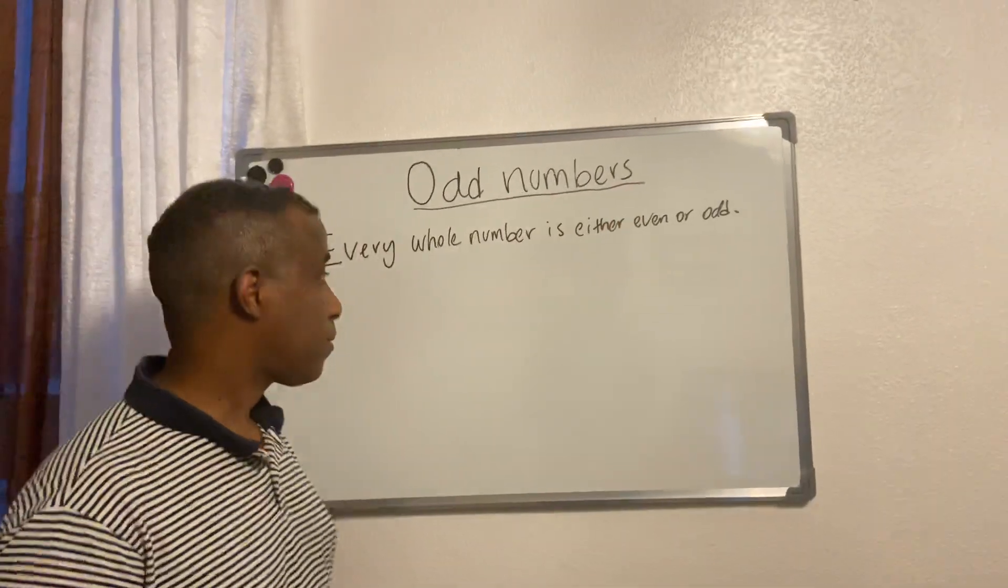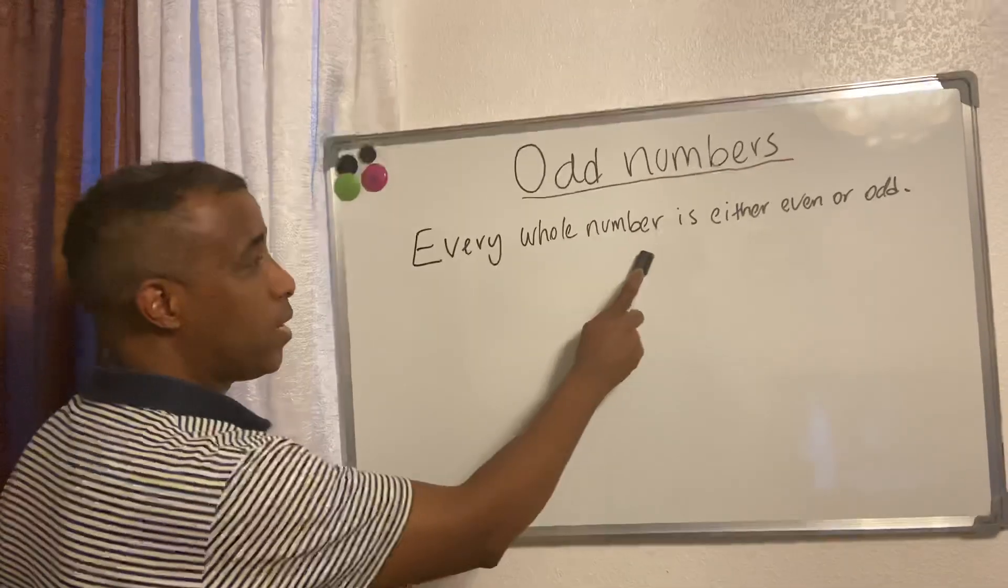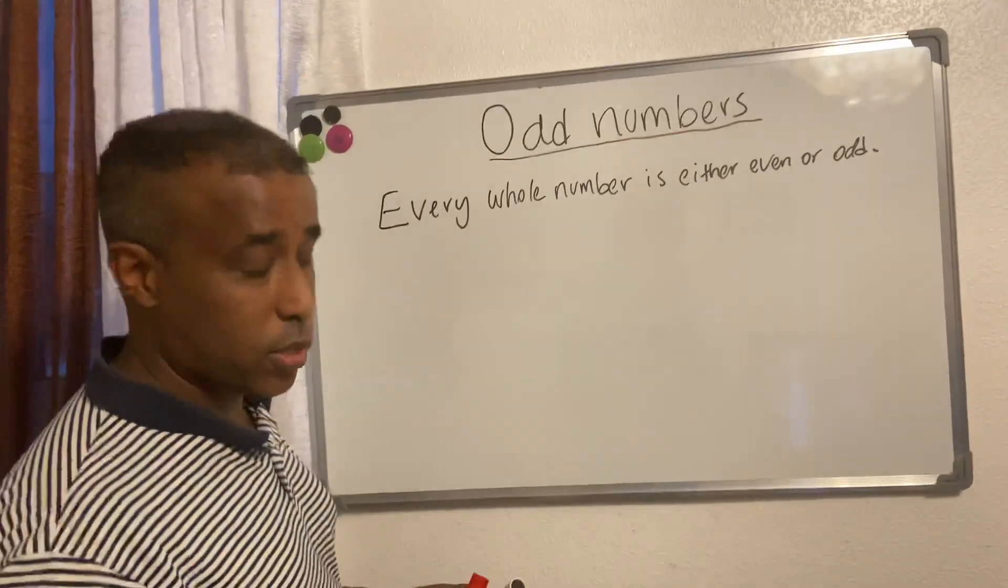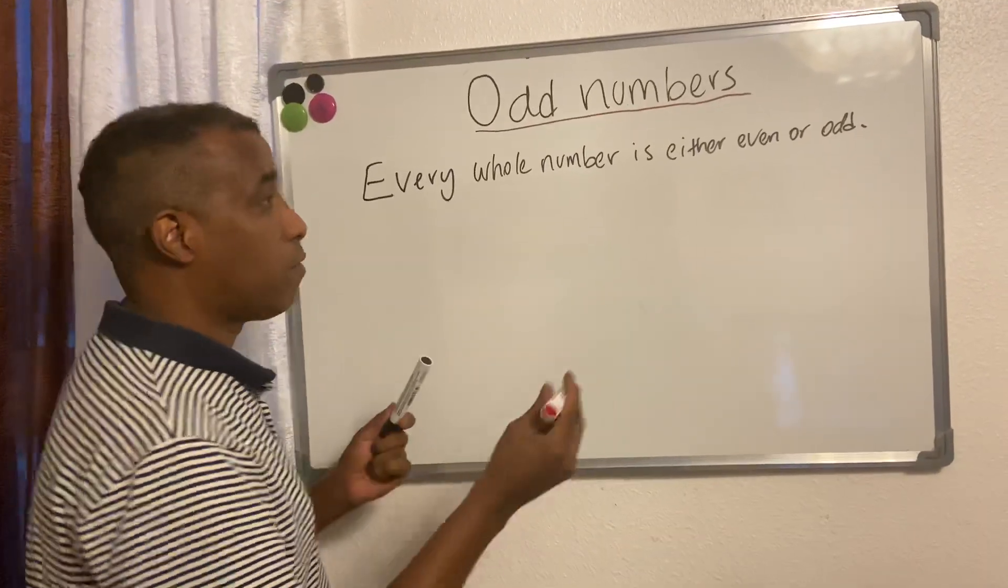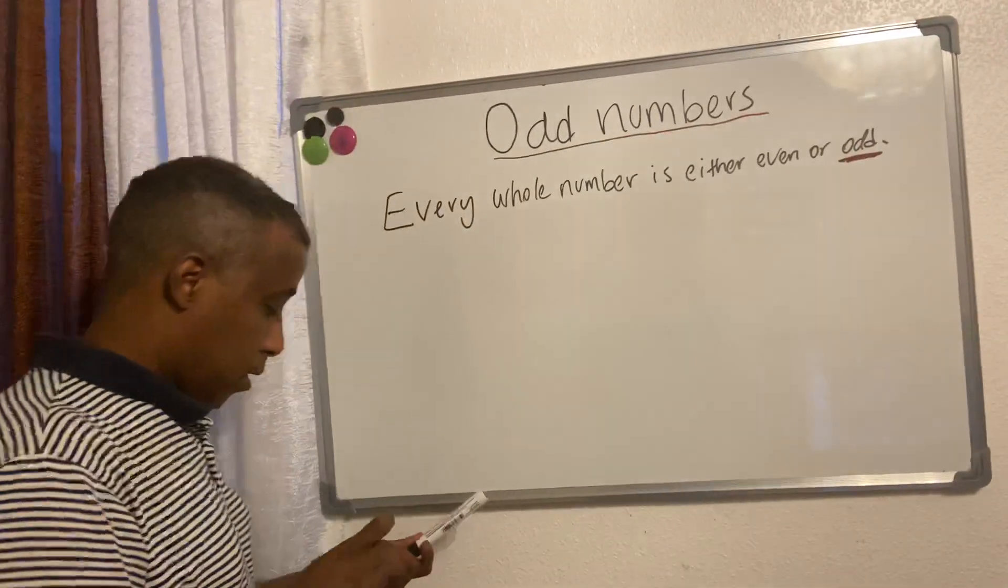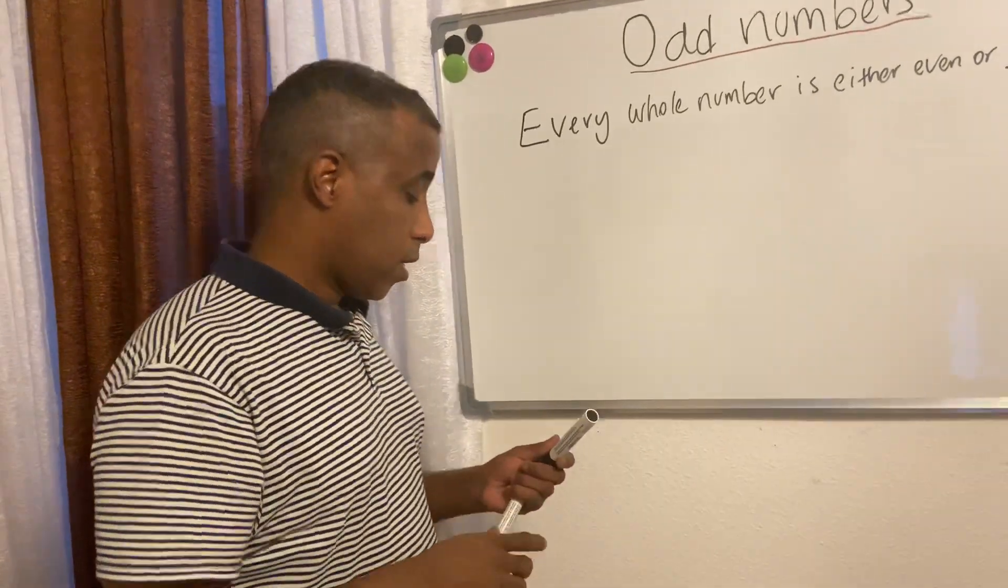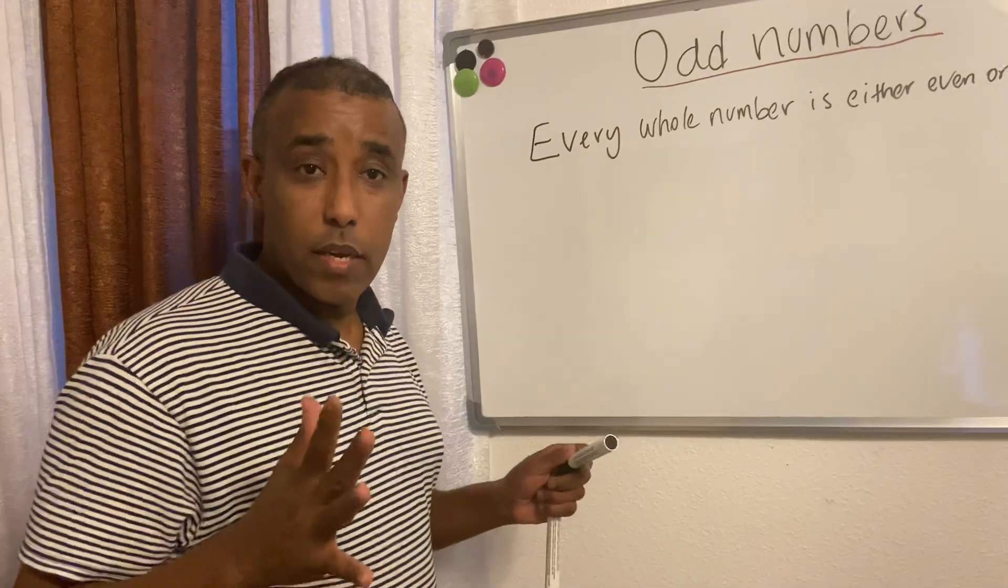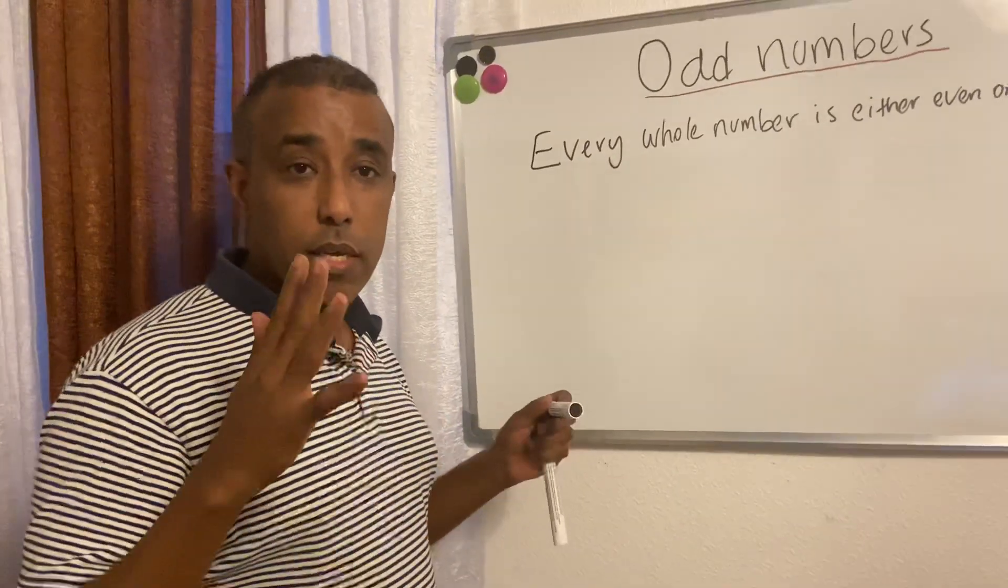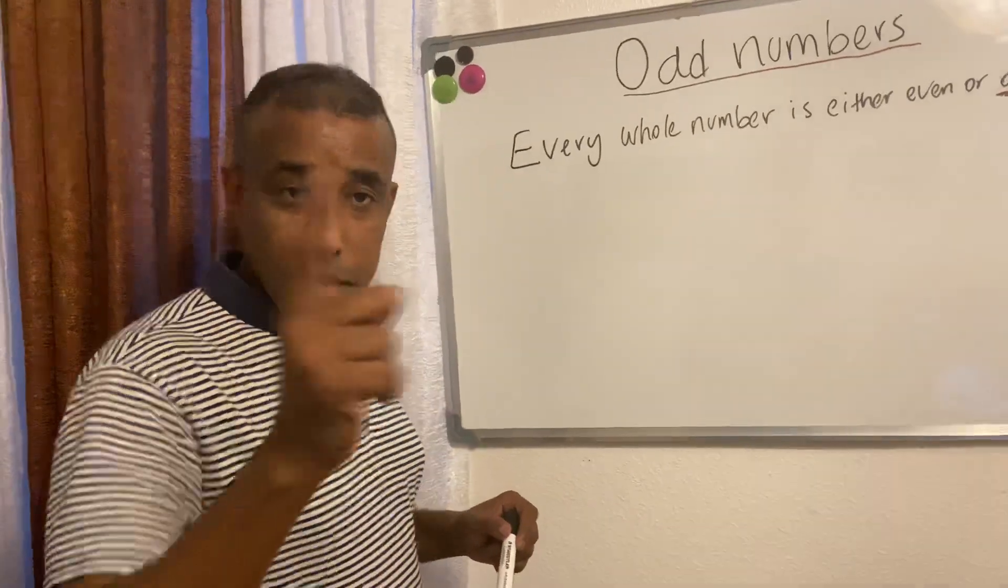Okay, odd numbers. We say every whole number is either even or odd, but this video will be covering odd numbers. The next video will be covering even numbers. Let's start one to ten and see how many odd numbers we can find. You got a pen and paper? Let's go.